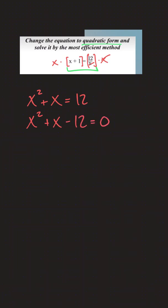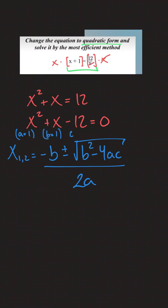And now we need to find a way to factorize that expression so we can find the value of x. x1, 2 will be negative b plus minus b squared minus 4ac divided by 2a. In this case, a is equal to 1, b is equal to 1, and c is equal to negative 12.